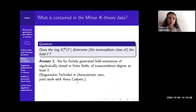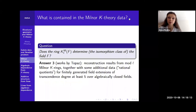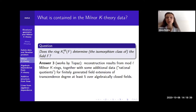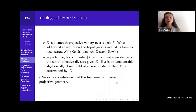Before we do that, I want to discuss two other questions on general reconstruction properties. For the same question concerning the Milner K-ring, there are also works by Topaz where he has reconstruction results from mod L Milner K-rings — a smaller amount of data — however those must be enriched with some additional data, the so-called rational quotients, in order to get the reconstruction results. This works for finitely generated field extensions of transcendence degree at least five over algebraically closed fields.